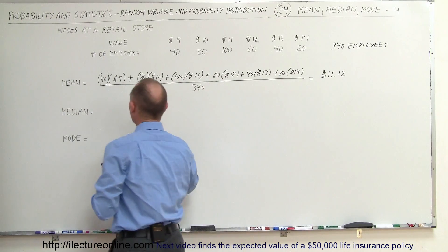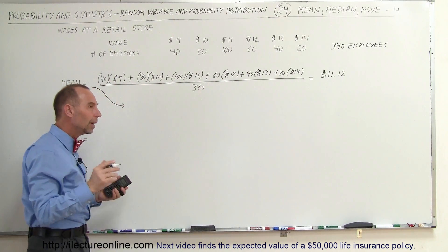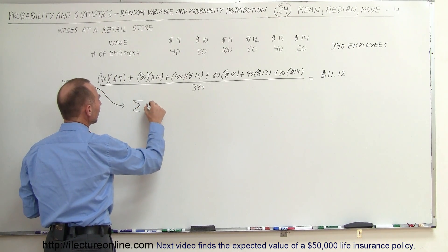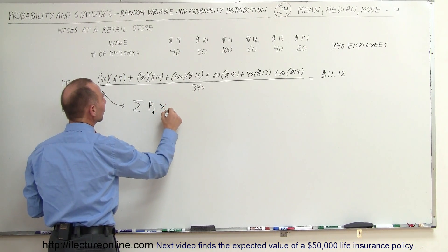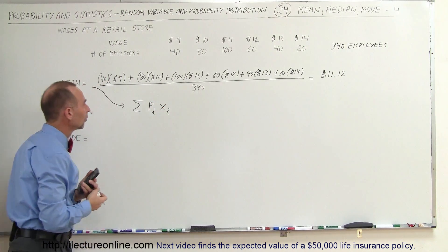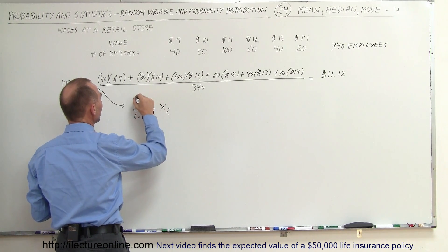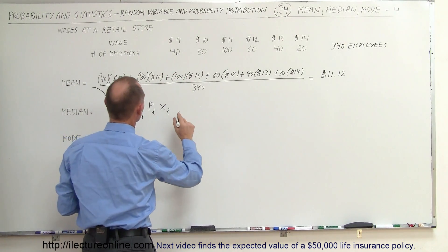We could have also thought about it in this way. We can find the same result by saying, well, we can sum up the probability of what each employee earns and multiply that times the amount of that earnings. So, for example, that would be from i equals 1 to n. And of course, it would be six different categories.